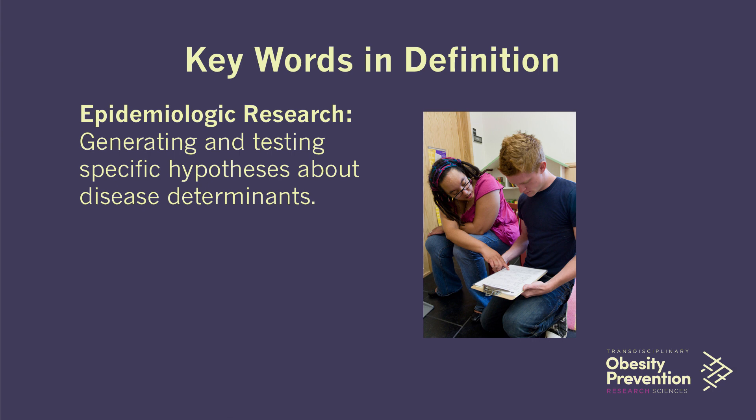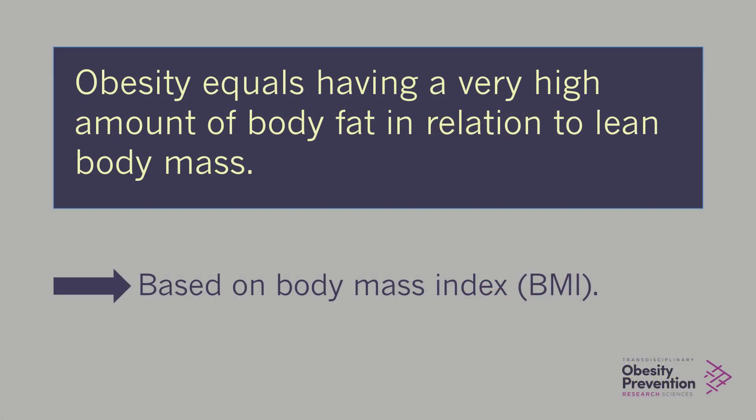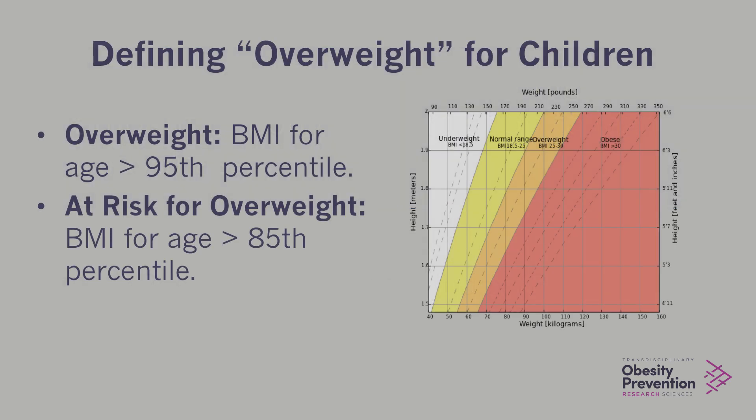For children, this is based on the child's age — you're comparing whether they are overweight based on age, and we look to see if they fall within a certain percentile. If they're overweight, you're usually looking at kids that are greater than the 95th percentile. At risk for overweight would be greater than the 85th percentile. For adults, individuals we're concerned about are people who have a BMI of 25 or above. We're also very concerned about people who would be obese or severely obese, with a BMI greater than 30, for example.